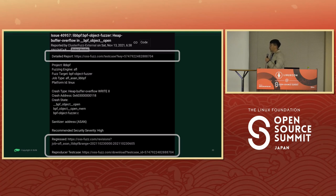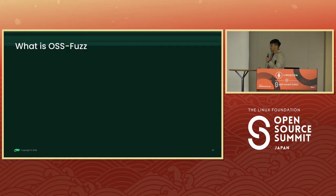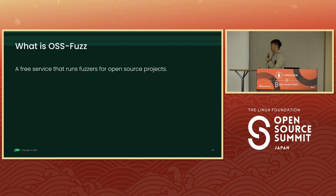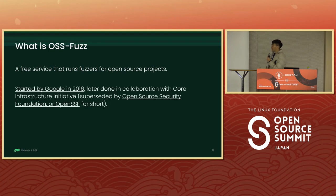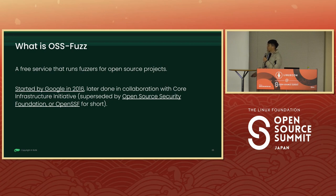So that brings a question: what is OSS-Fuzz? Looking into the documentation, it says that it's a free service that runs fuzzers for open source projects. It's a service that was started by Google back in 2016, and later is done in collaboration with the Open Security Foundation, which is OpenSSF for short.